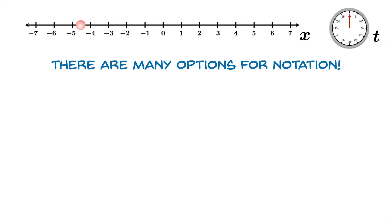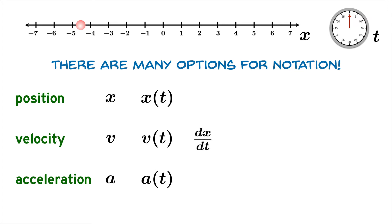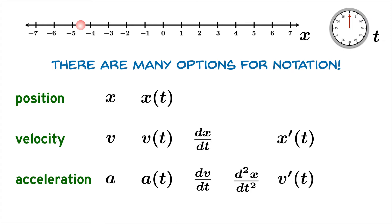There are many options for notation for these ideas — position, velocity, and acceleration. Let's pick names x, v, and a, emphasizing that they're functions of time. Using Leibniz notation, the velocity is dx/dt. Lagrange notation would have us write x′(t). The acceleration is the derivative of velocity with respect to time, and also the second derivative of position with respect to time. In Lagrange notation we could write v′ for the acceleration, or x″(t).